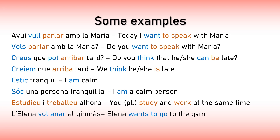'Creiem que arriba tard' — We think that he or she is late. Now I wanted to add these two sentences: 'Estic tranquil' (I am calm) and 'Soc una persona tranquila' (I am a calm person). Even though in English they are almost identical, you use a different verb in Catalan. There are two ways to express the verb 'to be' in Catalan, and I will make a separate lesson for this, but I just wanted to let you know in case you see different cases where two different verbs both mean 'to be'.